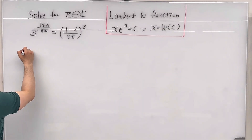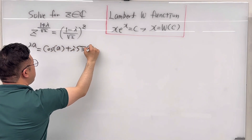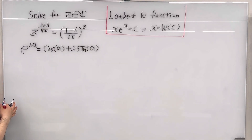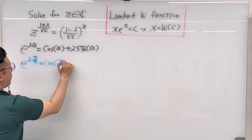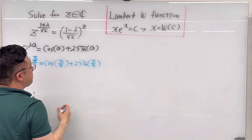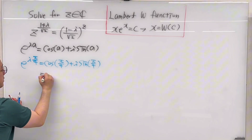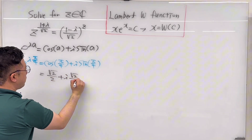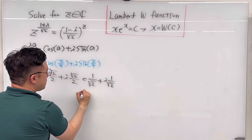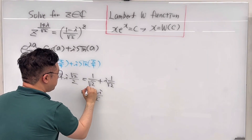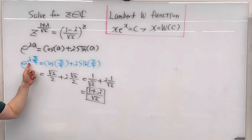Using Euler's formula first: e to the power of i·a equals cosine of a plus i times sine of a. Plugging in a equals pi over 4, e to the power of i·pi/4 equals cosine(pi/4) plus i·sine(pi/4). Both cosine and sine of pi/4 equal square root of 2 over 2, so this becomes (1 plus i) over square root of 2. Therefore (1 plus i) over square root of 2 equals e to the power of i·pi/4.